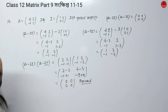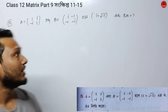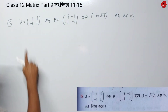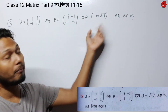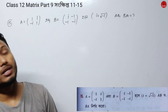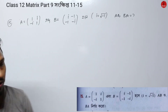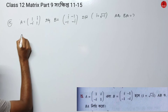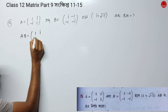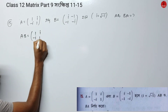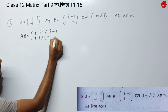Last question: given matrix A and matrix B, where i is a complex number (i² = -1), show that AB ≠ BA. We have A = [1, i; -i, 1] and B = [i, -1; -1, -i]. We compute AB first.